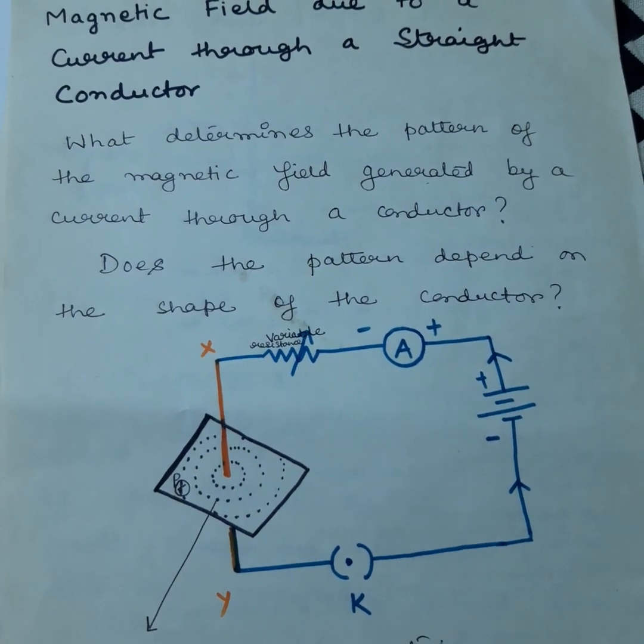Close the key so that the current can flow through the copper wire. Ensure that the copper wire placed between points X and Y remains vertically straight, then gently tap the cardboard a few times. Observe what happens: current is flowing through the copper conducting wire, and as a result a magnetic field generates around it. We know that a magnet attracts iron.